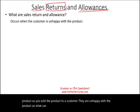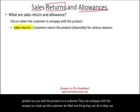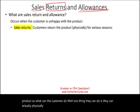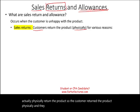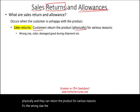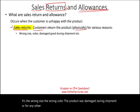One thing the customer can do is actually physically return the product. The customer returned the product physically and they can return the product for various reasons: it's the wrong size, the wrong color, or the product was damaged during shipment, or for any other reason. That's what a sales return is.